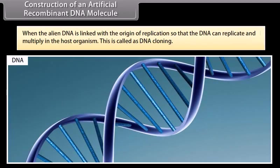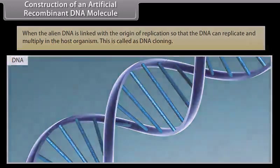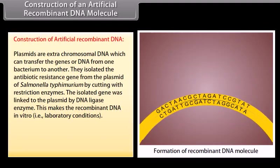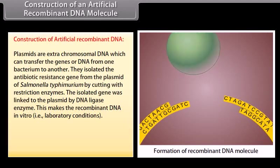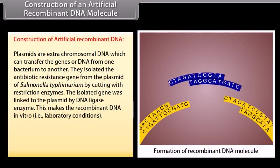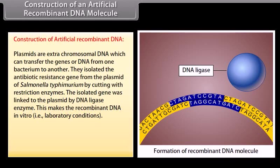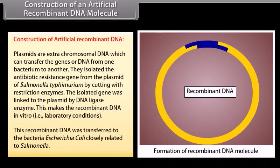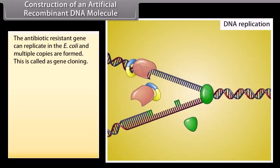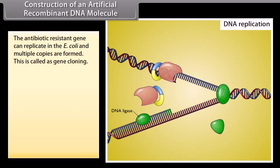Construction of an artificial recombinant DNA molecule: When the alien DNA is linked with the origin of replication, so that the DNA can replicate and multiply in the host organism, this is called DNA cloning. Plasmids are extra-chromosomal DNA which can transfer genes or DNA from one bacterium to another. The antibiotic resistance gene was isolated from the plasmid of Salmonella typhimurium by cutting with restriction enzymes. The isolated gene was linked to the plasmid by DNA ligase enzyme, making the recombinant DNA in vitro. This recombinant DNA was transferred to the bacteria Escherichia coli, closely related to Salmonella. The antibiotic resistance gene can replicate in E. coli and multiple copies are formed — this is called gene cloning.